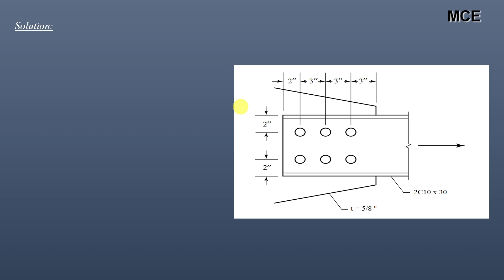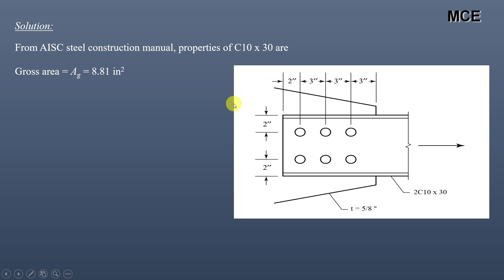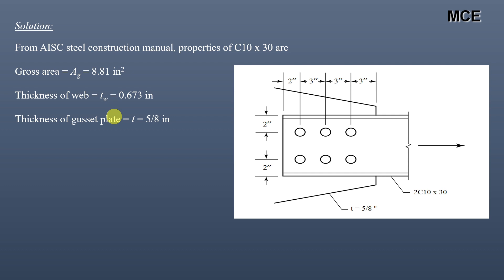From the AISC Steel Construction Manual, properties of one C10x30 channel section: gross area is 8.81 in², thickness of the web is 0.673 inch, and thickness of the gusset plate is given in the question as 5/8 inch.